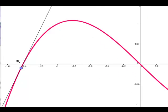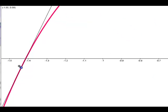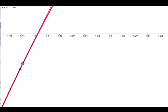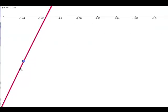For instance, if we zoom in on that point, notice that the graph becomes about as straight as that tangent line. We can continue to zoom in, and we just see that they almost become the same line.